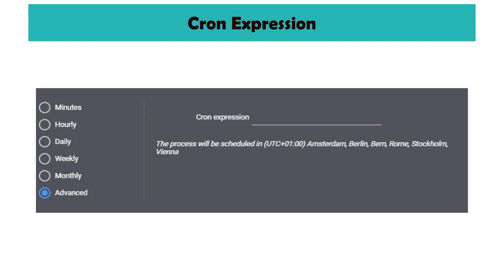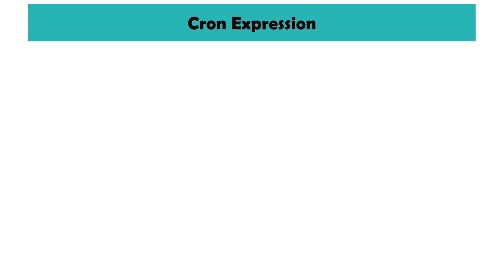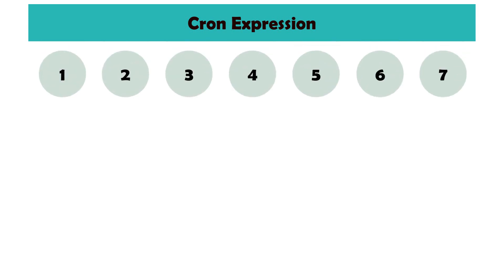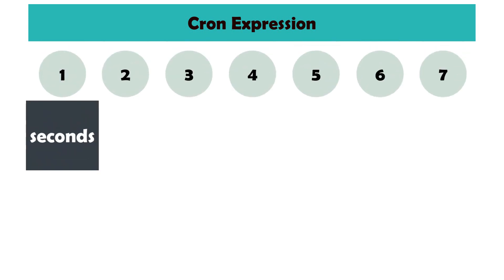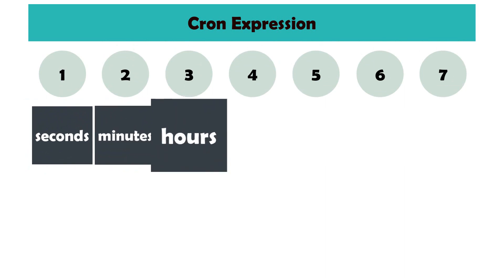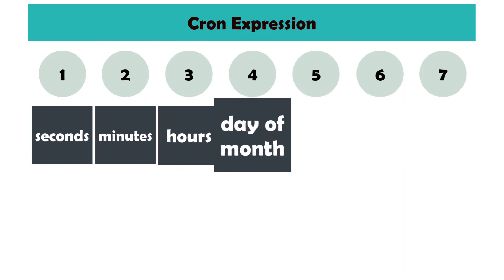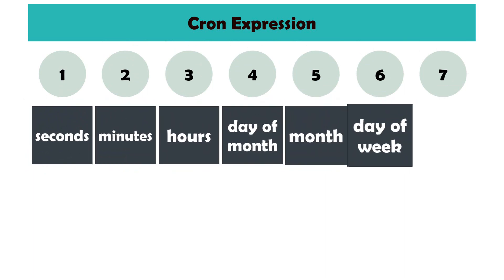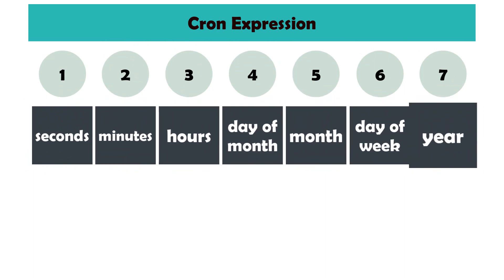This function in Orchestrator consists of seven parts. These are: seconds, minutes, hours, day of month, month, day of week, and year. You have to fill in the values for the respective fields in this order — the seconds come first, then the minutes, then the hours, etc.